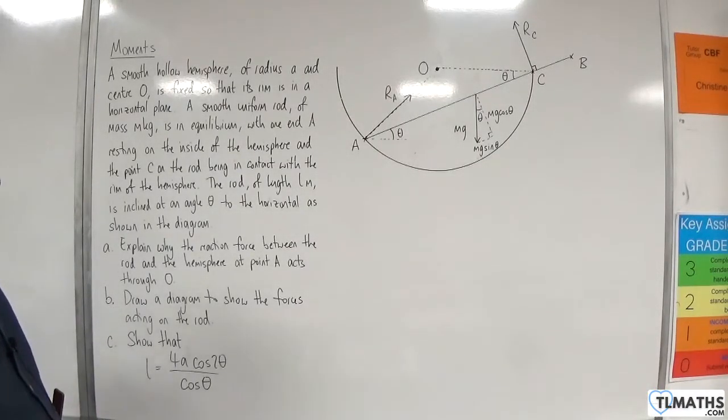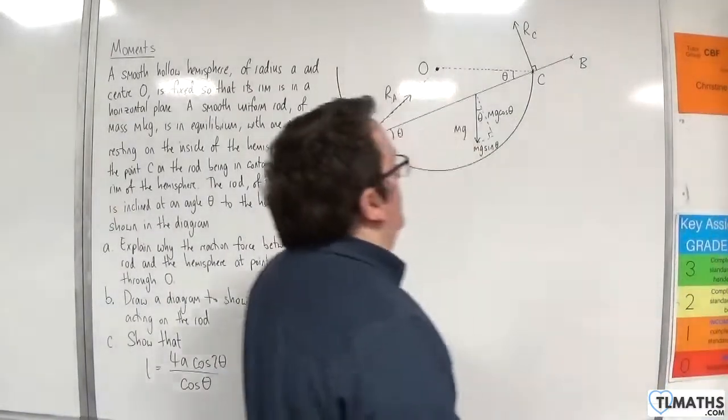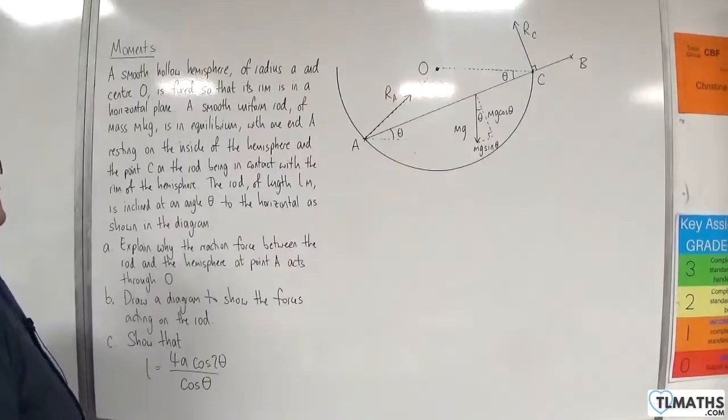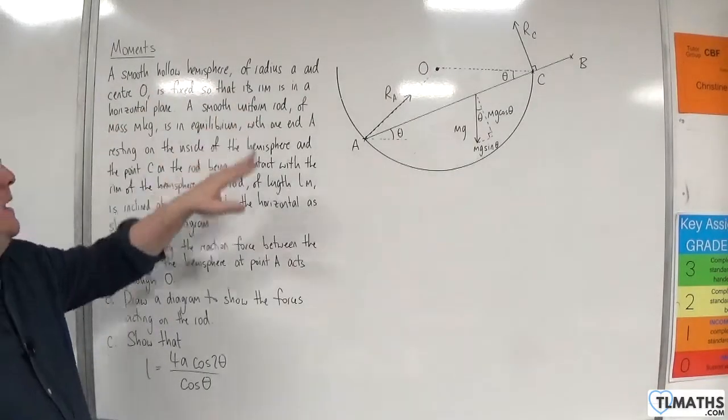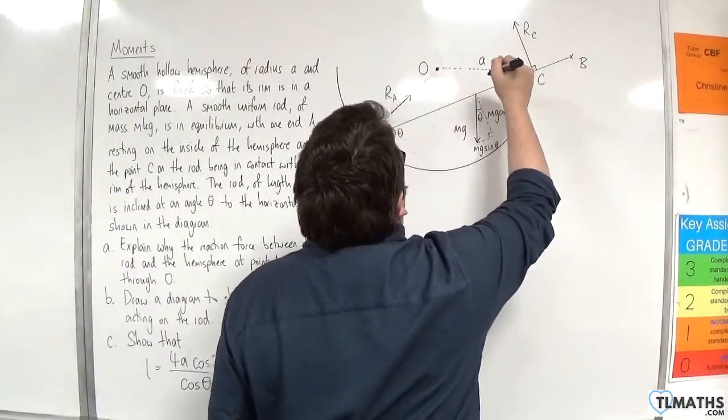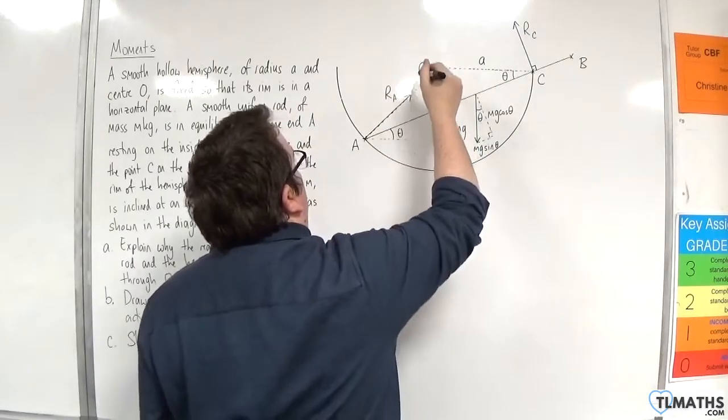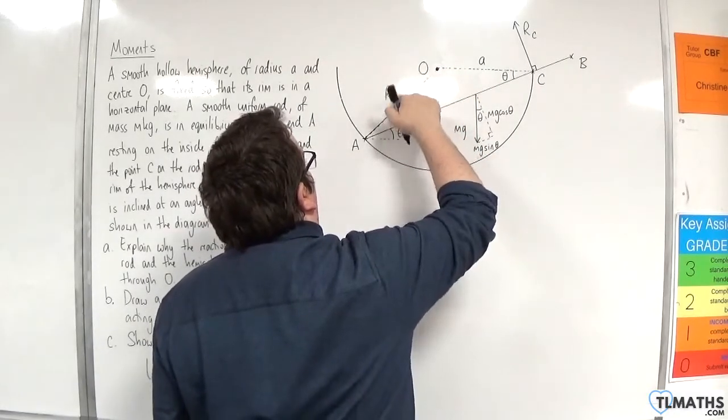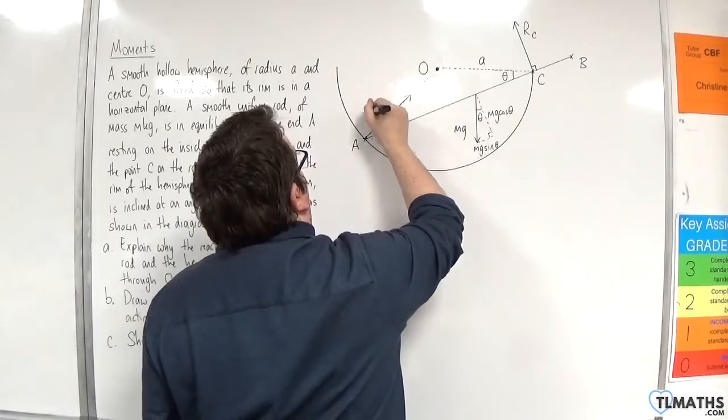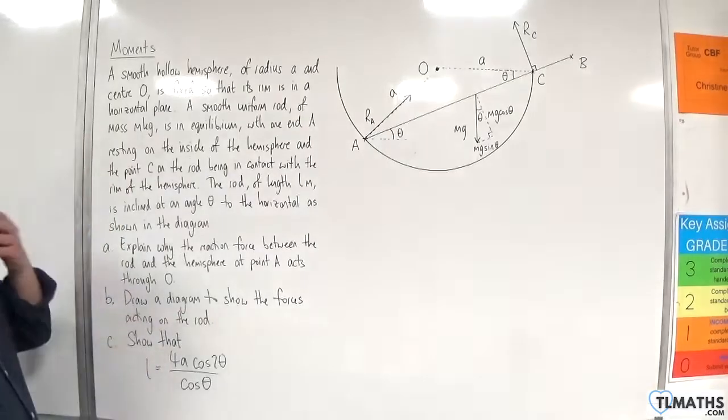Now, I've done part B here. Let's just label our diagram a little bit more with what we know. Because the hemisphere has a radius of A, this distance is A. So that means that distance is A because it's another radius.